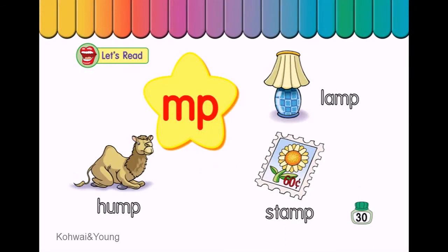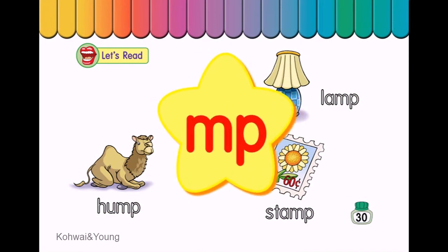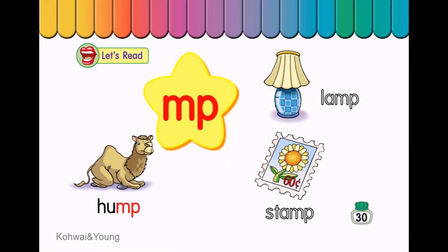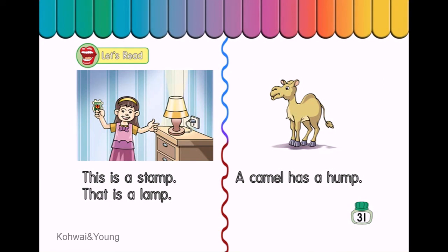Let's read. Hump. Lamp. Stamp. Let's read. This is a stamp. That is a lamp. A camel has a hump.